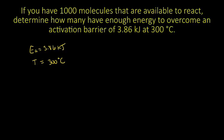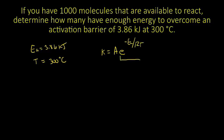As a reminder, we know that K equals A times e to the minus Ea over RT. This part of the equation represents the fraction of molecules that have enough energy to overcome the activation barrier — we'll call this the fraction factor, or FF. If we can calculate the fraction factor, then we can figure out how many molecules can react.